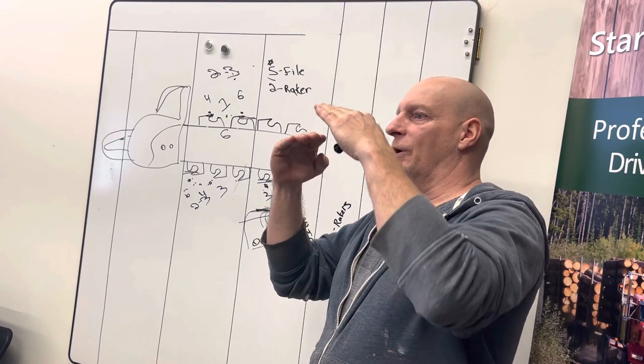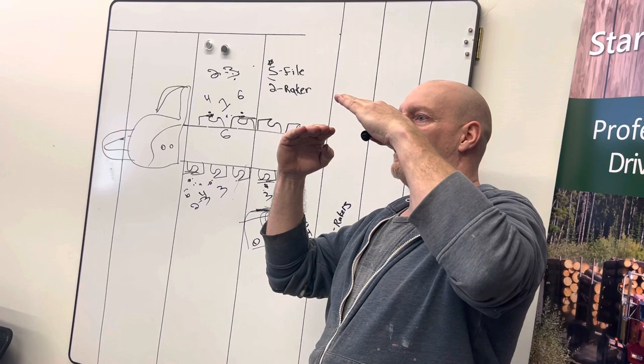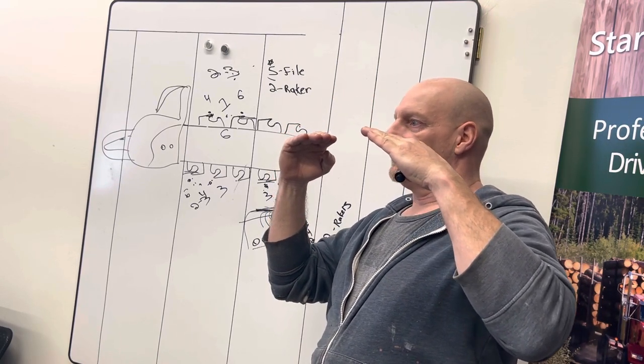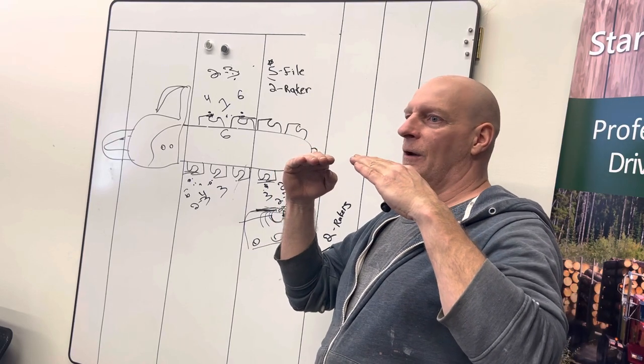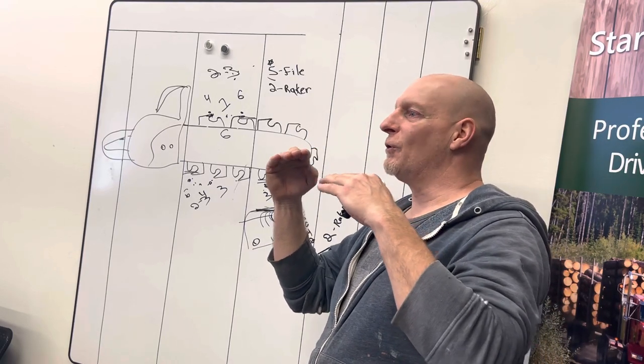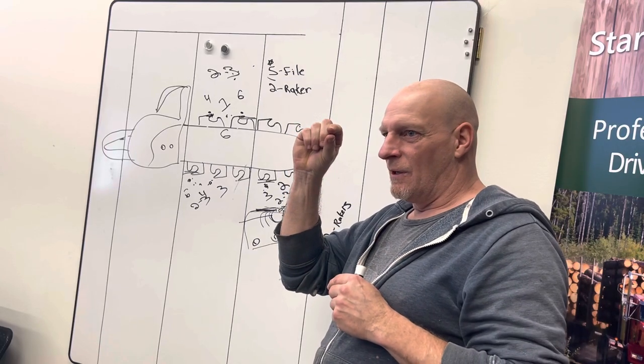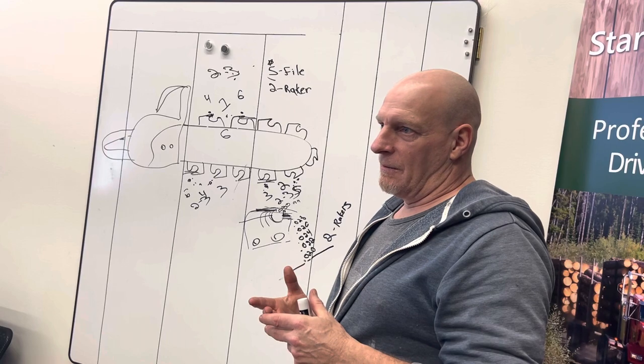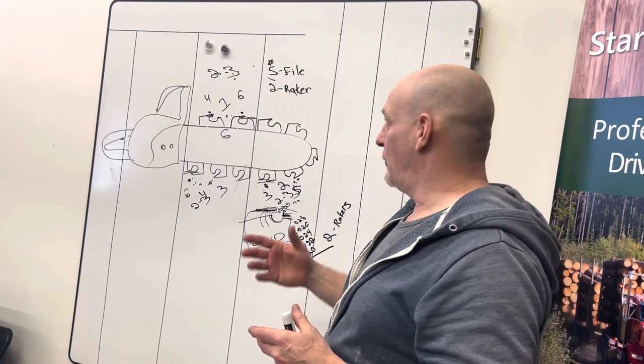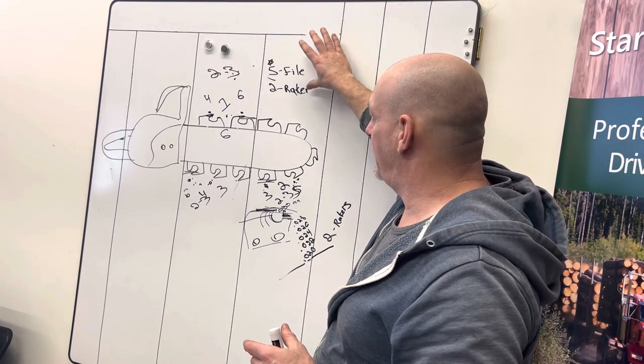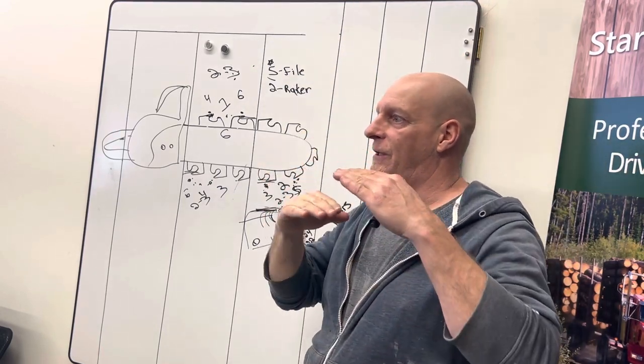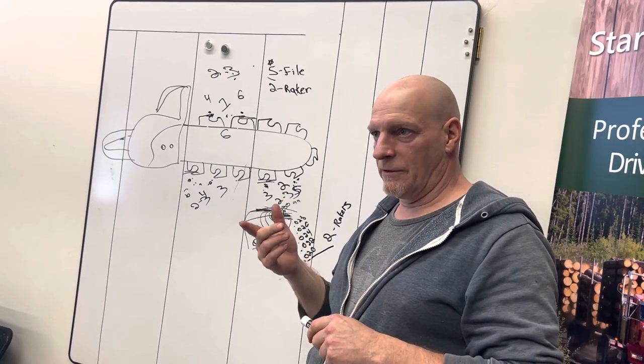So we're going to work it down a little bit, work it down a little bit, and then take two strokes off the rakers. Work it down, work it down, two strokes off the rakers. So we're only working at like a .010 millimeter gap difference. So you're still getting a good-sized chip when you're filing. So if you go with the every fifth filing, take two strokes off your rakers, that'll give you a nice consistency all the way through your chain. Does that make sense?